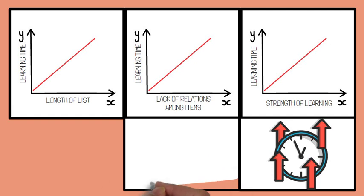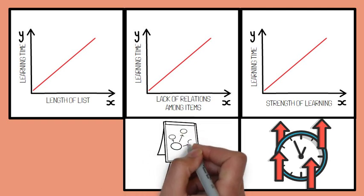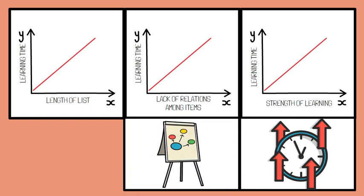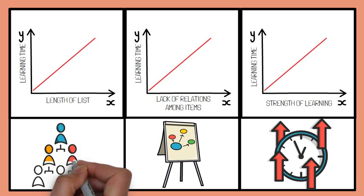If participants are not restricted to the serial learning method and are allowed to give free recall, verbal learning becomes organizational. This implies that in free recall, participants recall the words not in the order of presentation but in a new order of sequence.